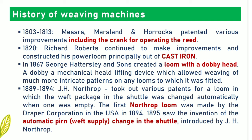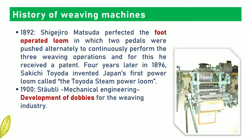In 1867, G. Hattersley and Sons created a loom with a dobby head. In 1889 to 1894, J. H. Northrop took out various patents for a loom in which the weft package in the shuttle was changed automatically when one was empty. In 1895, the invention of the automatic pirn change in the shuttle was introduced by J. H. Northrop. In 1900, development of dobbies for the weaving industry was undertaken by Stäubli.